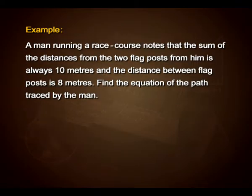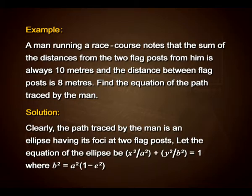We have one more interesting problem here. A man running a race course notes that the sum of the distances from the two flag posts from him is always 10 meters and the distance between flag posts is 8 meters. Find the equation of the path traced by the man. The path traced by the man is an ellipse having its foci at the two flag posts.